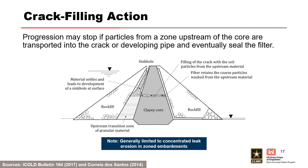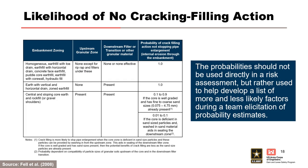Progression may stop if particles from a zone upstream of the zone are transported into the crack or developing pipe and eventually seal the filter. One of the purposes of transition zones is to provide a source of feed material into a crack in the core to prevent piping. For crack stopping to occur, there must be a filter or transition downstream of the core to trap the eroded particles, provided the leakage flow is not too great to break out or move around the healed zone. Therefore, this node is generally limited to concentrated leak erosion in zoned embankments. Fell et al., 2008 provides some suggested guidance for likelihood of no crack filling action based on the characteristics of the embankment zoning. There is no crack filling action for homogeneous embankments or embankments with no upstream zone; therefore, the probability is 1.